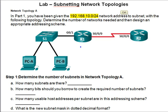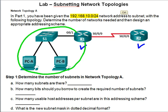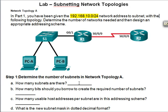We have two routers, R1 and R2. Using these two routers as a guide, we can draw two bubbles. The green bubble represents one subnet and the purple bubble represents the second subnet. So in this question, we can divide the network into two subnets.